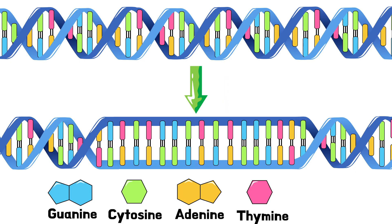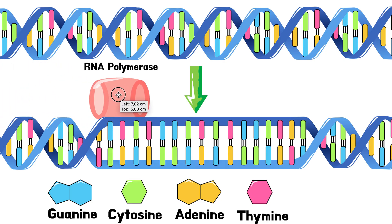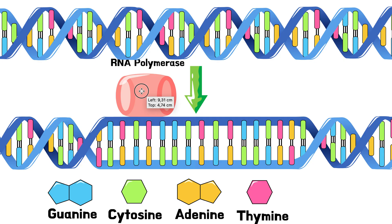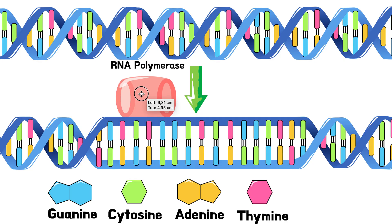So transcription is copying the specific segment we need to make a protein. It happens in the nucleus — it's the process of copying a segment or gene of DNA into mRNA. Our DNA is too big to leave the nucleus, but this small mRNA copy of the specific segment we need is small enough to leave into the cytoplasm where translation will happen. To start, we need to uncoil the DNA — because if it's all wound up and supercoiled, it's hard for any enzymes or molecules to copy it. There's a key enzyme called RNA polymerase that does a lot of things in transcription and translation.